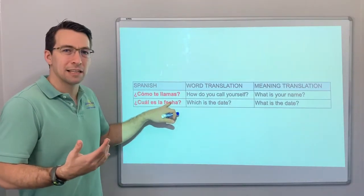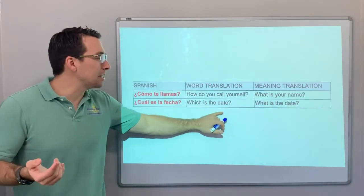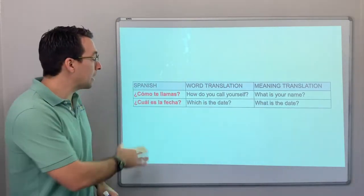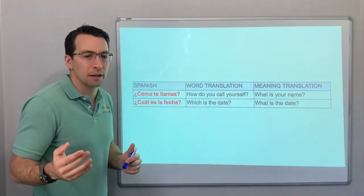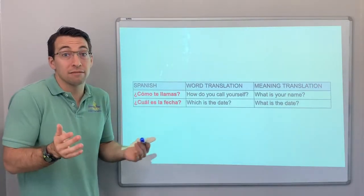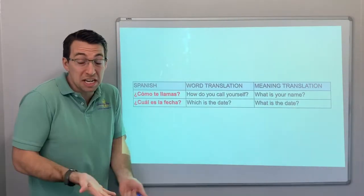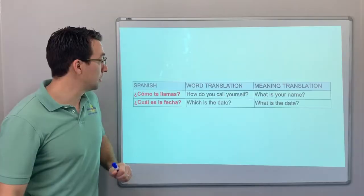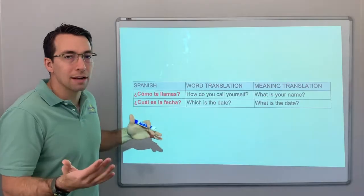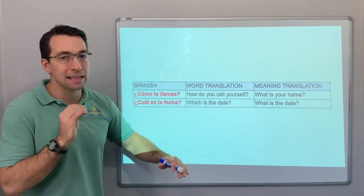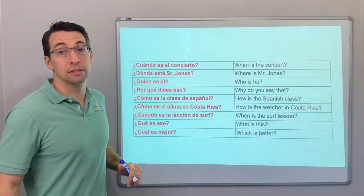¿Cuál es la fecha? We don't say 'which is the date' in English — we say 'what is the date?' But in Spanish, ¿cuál? is used any time there's an option. The date has about 30 options in a month — which day is it today? ¿Cuál es la fecha? It's not a literal translation; it's a meaning translation.